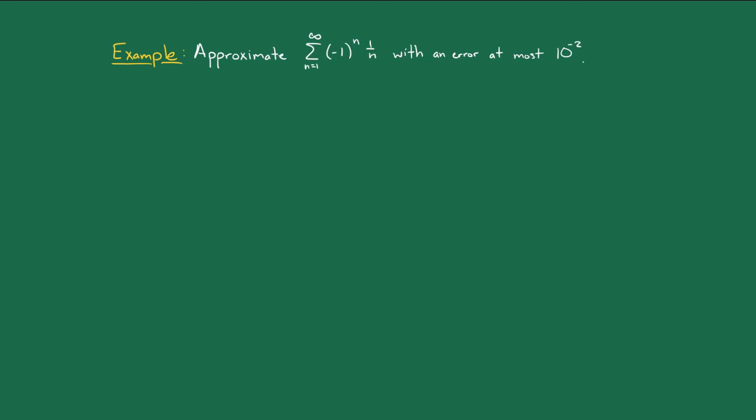So, how will we make the alternating series estimation theorem work for us? The goal is going to be to find an n such that bn plus 1 is less than or equal to 10 to the minus 2. And why would this help?